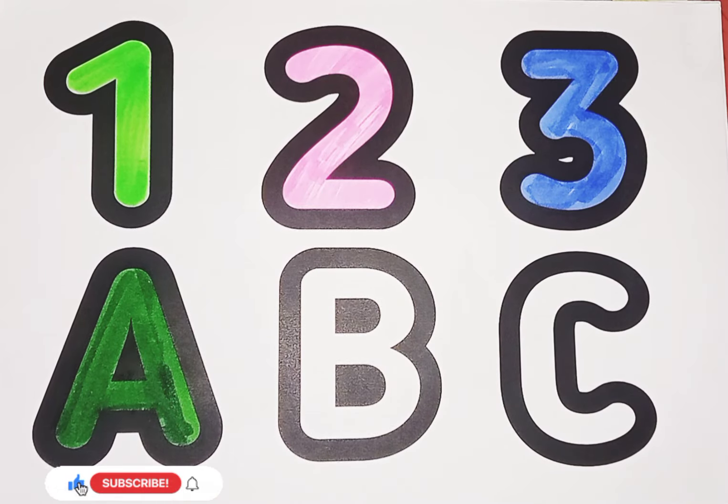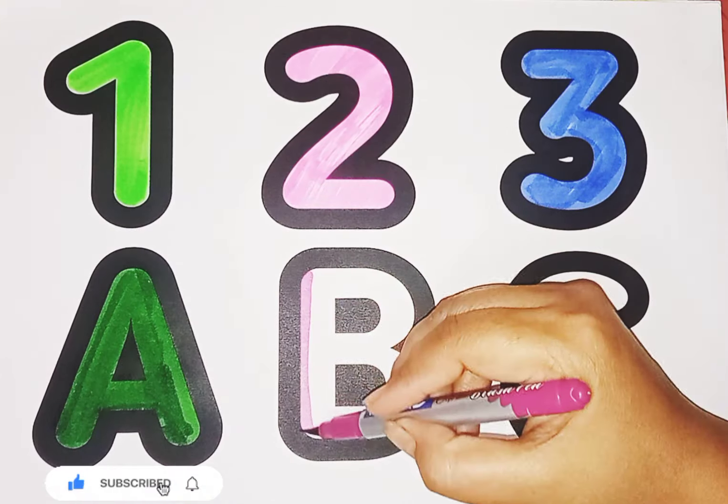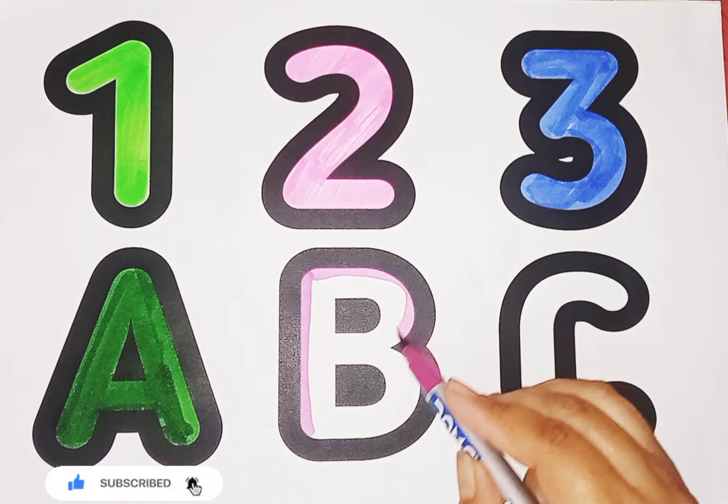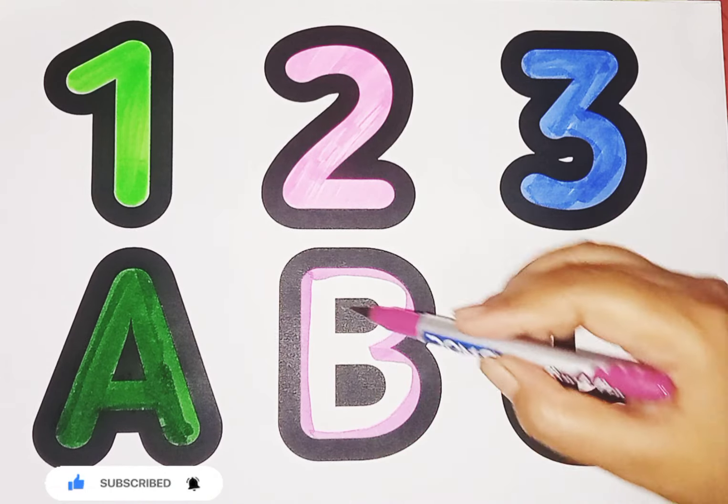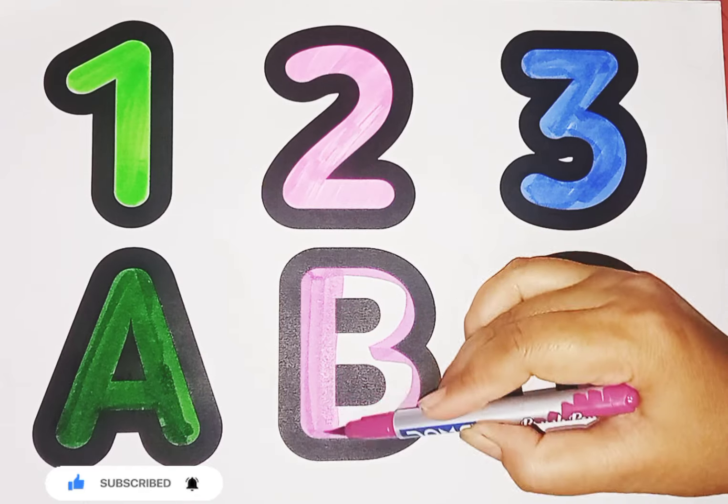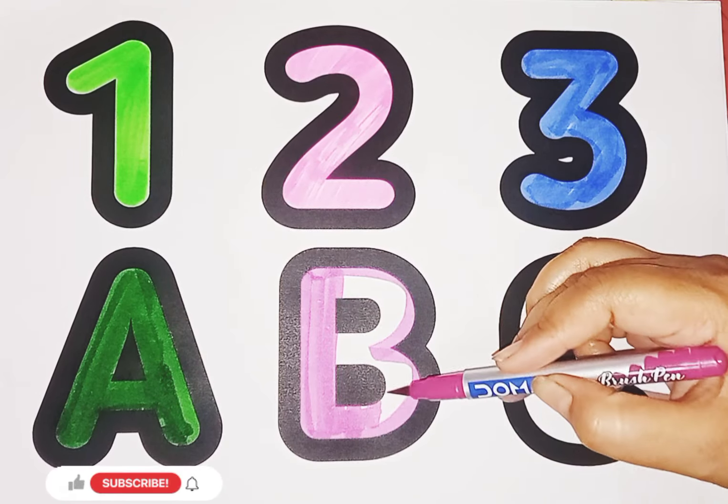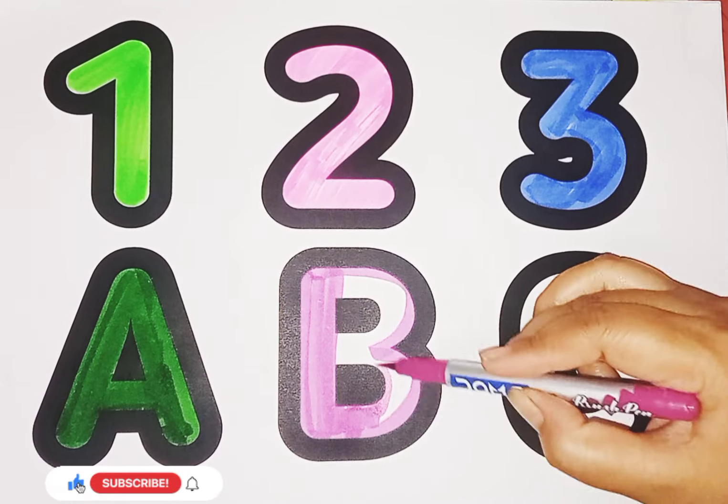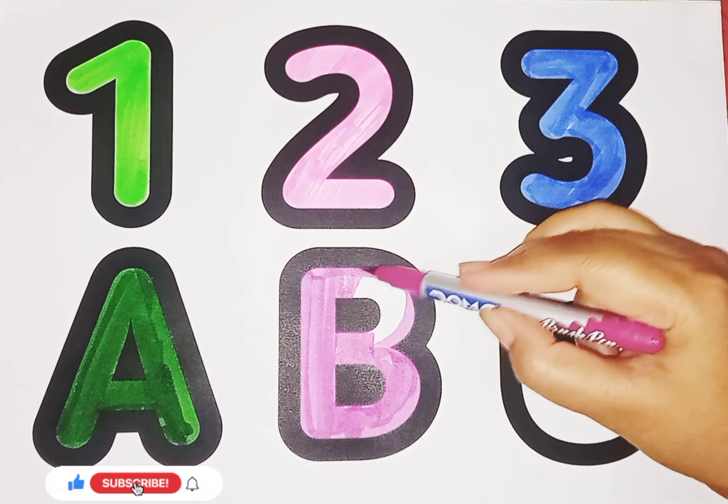Next is letter B, wine color. Letter B. B for banana. Sound B, B, Banana. Letter B.